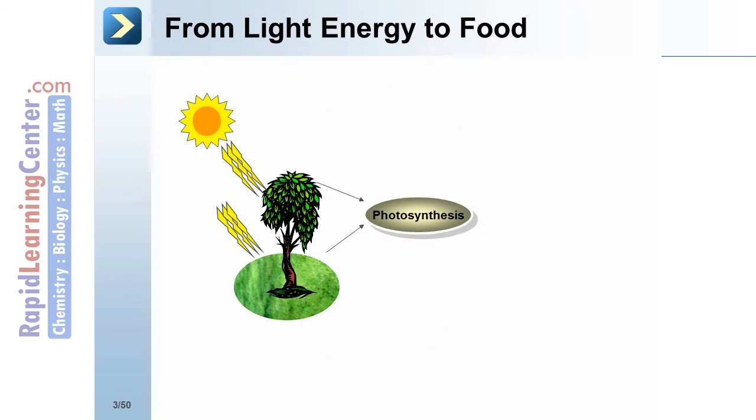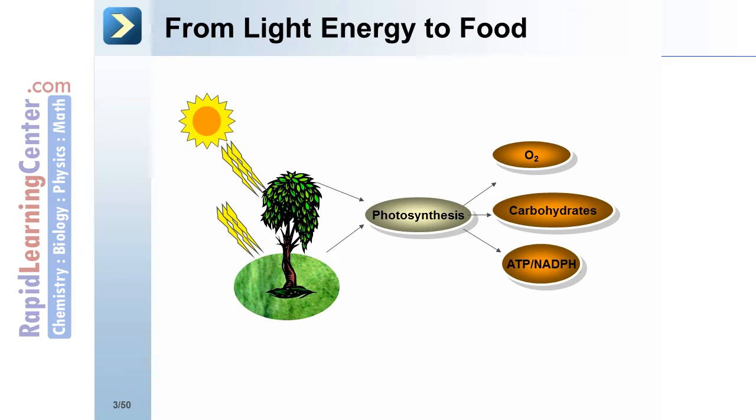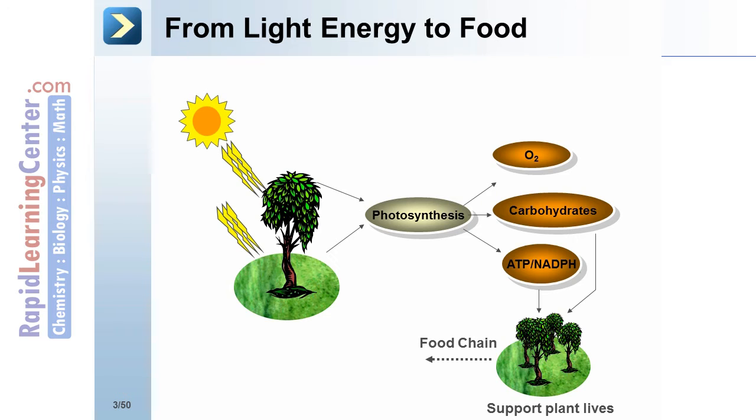From light energy to food. Photosynthesis produces oxygen, carbohydrates, ATP, and NADPH. This supports plant life. Plant life enters the food chain. This supports animal life.